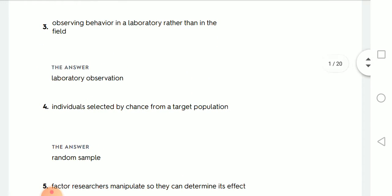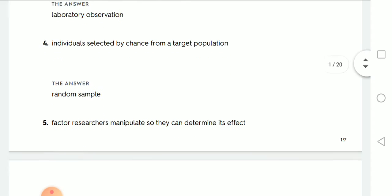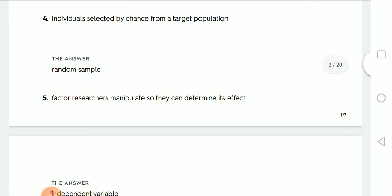Observing behavior in laboratory rather than in field is called, of course, laboratory observation. Comes from its name. Individuals selected by chance from a target population, we know that target population people I make research on selected randomly, so this is what? By chance, random sample.